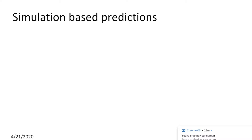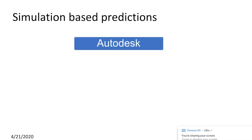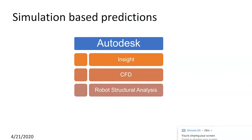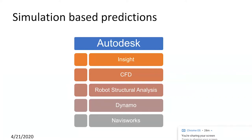Starting with simulation-based predictions, the simulation tools available in Autodesk software include Autodesk Insight, Autodesk CFD, Autodesk Robot Structural Analysis, Autodesk Dynamo, and Autodesk Navisworks.